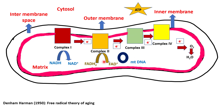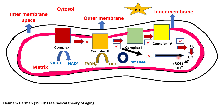During ATP production, electrons are transferred through the electron transport chain from NADH and FADH to oxygen, reducing oxygen to water. If the complexes of the electron transport chain do not function properly, electrons can leak and react with water, forming reactive oxygen species, or ROS.